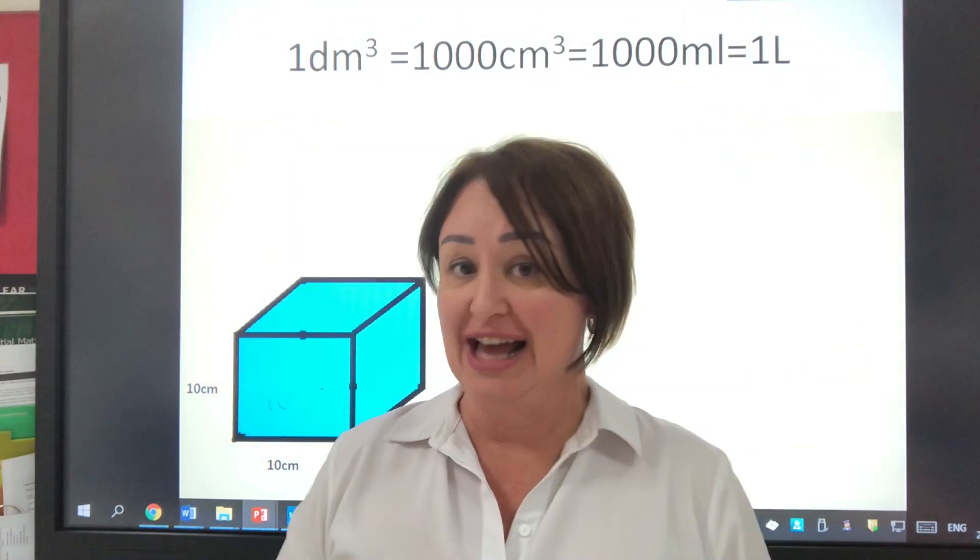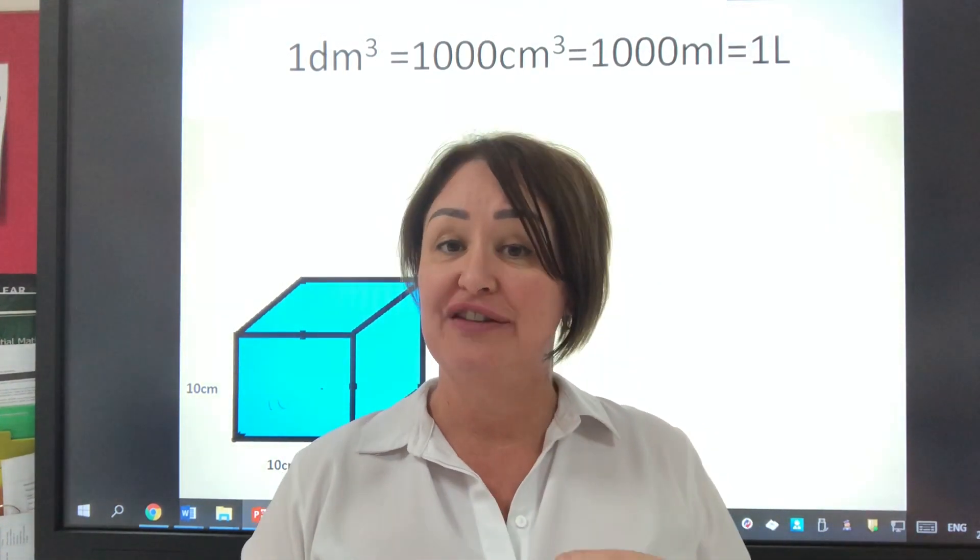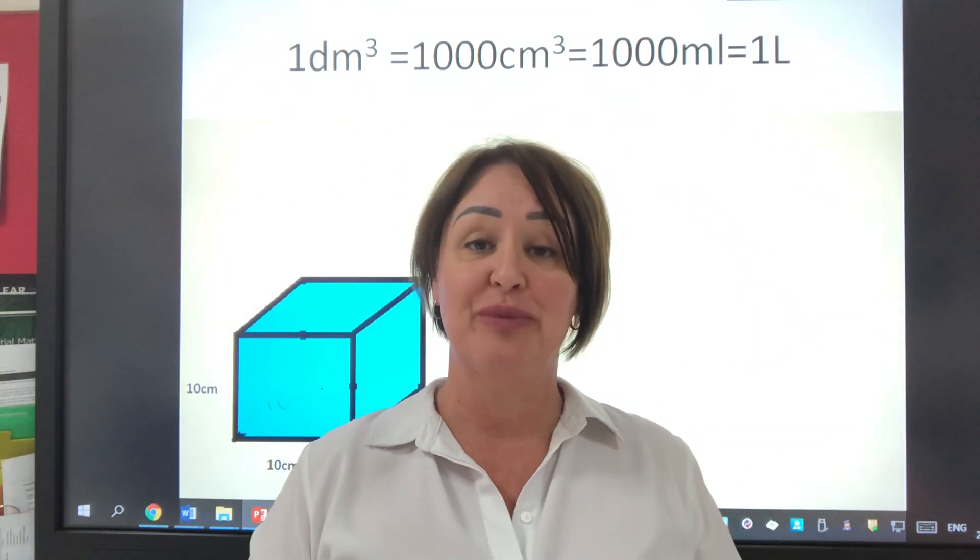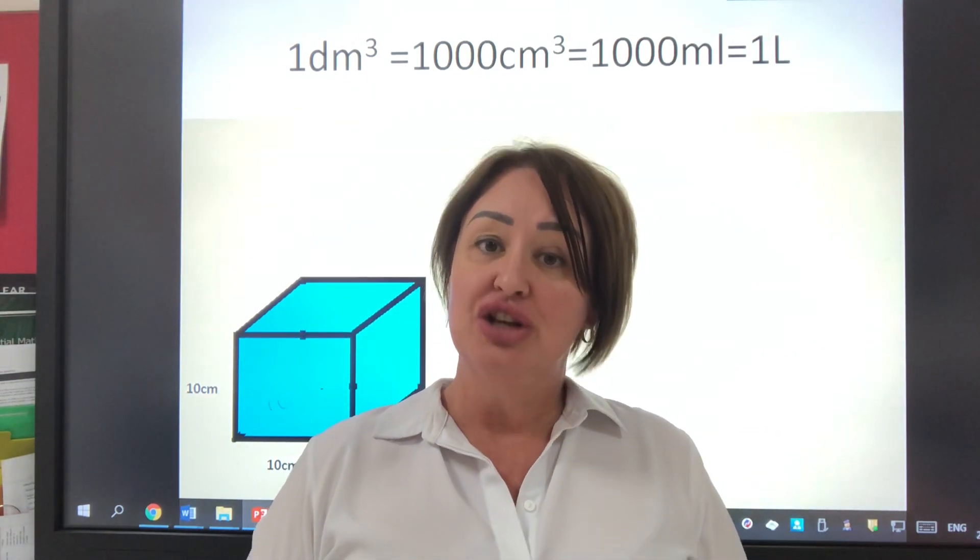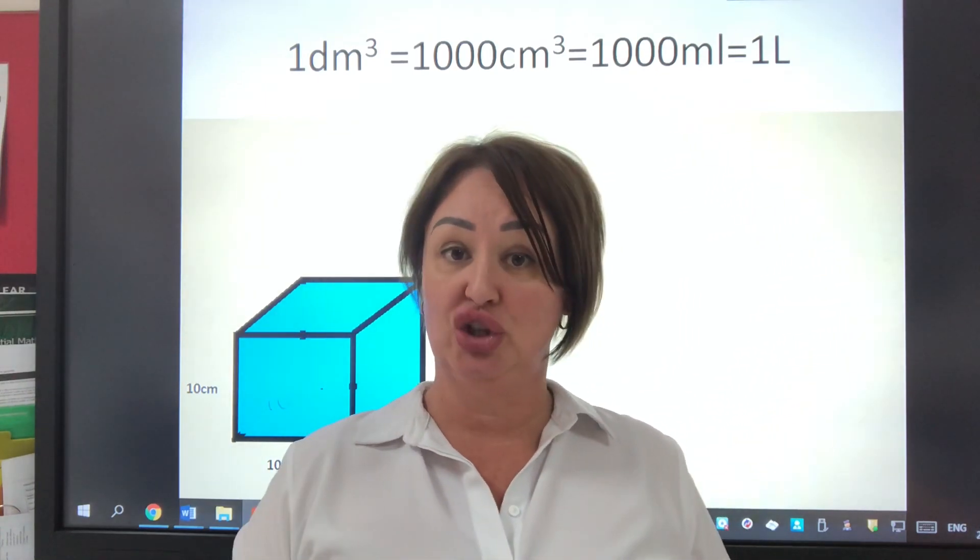I think the reason for that is because the L, which is the symbol for the litre, would easily get confused as a number in science and it's too important for that to happen. So we use decimetre cubed. So let's rationalise how a decimetre cubed is equal to a litre.